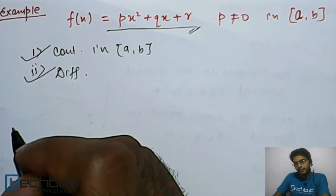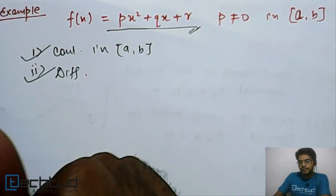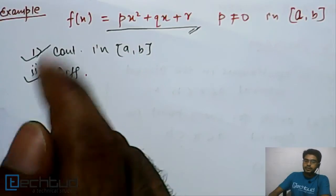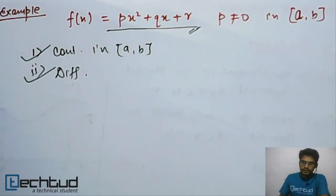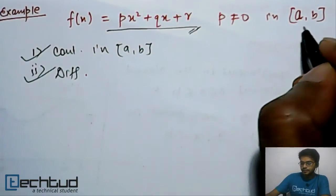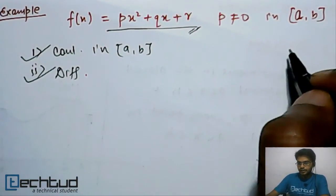Now, we don't have any third condition in Lagrange mean value theorem. So we say that it will be satisfied, and there will exist a point c where the slope of the tangent will be equal to the slope of the arc a, b.